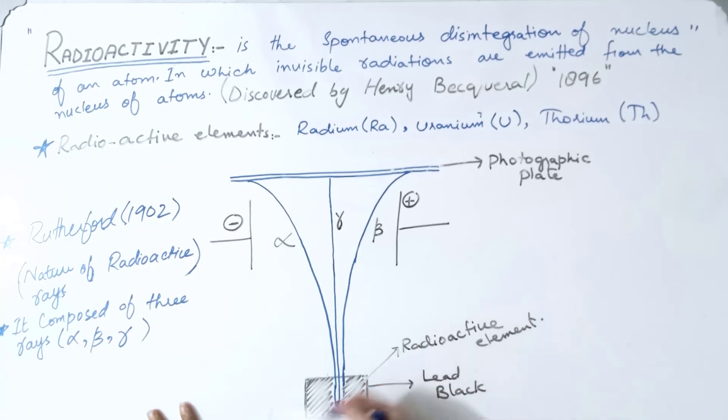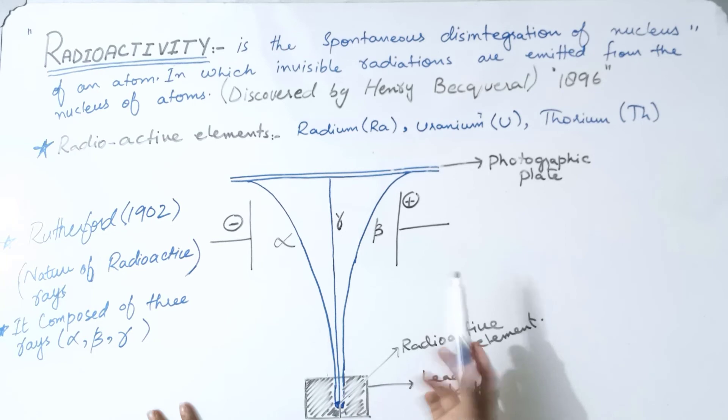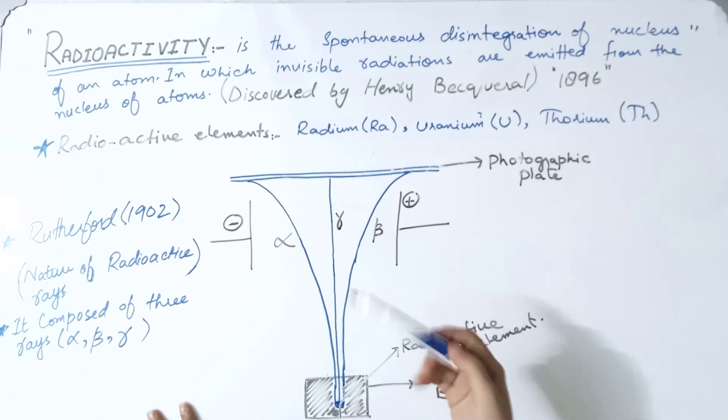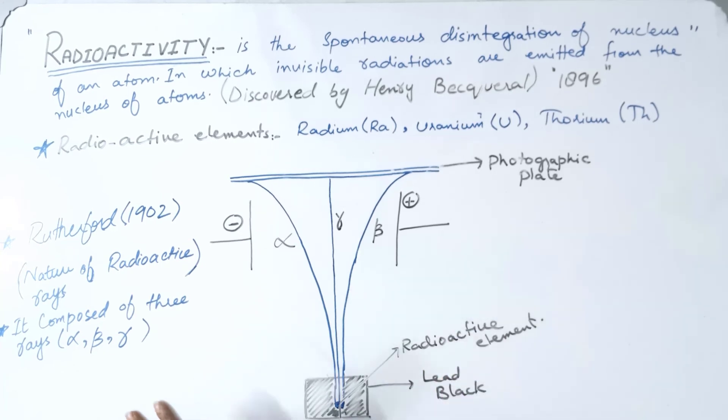Some components bent toward the negative terminal. These components moved in the electric field. Rutherford named these alpha rays, and they have a positive charge. That's why the components moved toward the negative terminal.